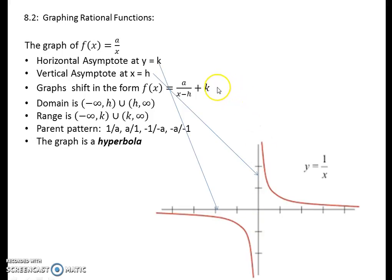The third point talks about how graphs shift. Your a value is taken in the numerator, your horizontal or left-to-right shift is in the denominator, and your vertical shift is after the main operation or fraction, as we've typically seen.